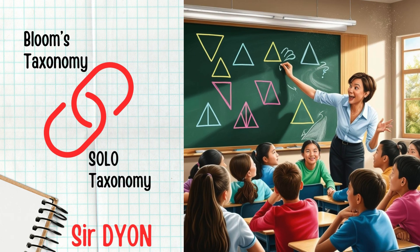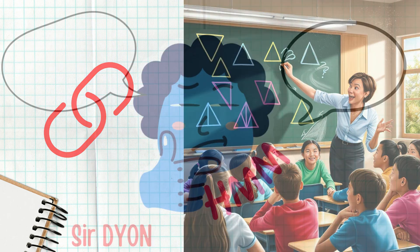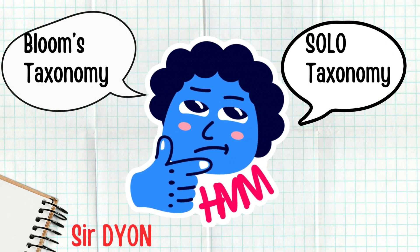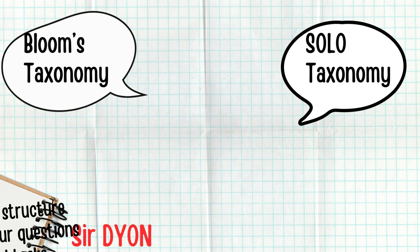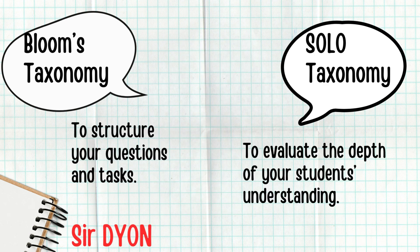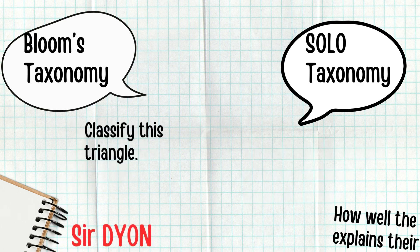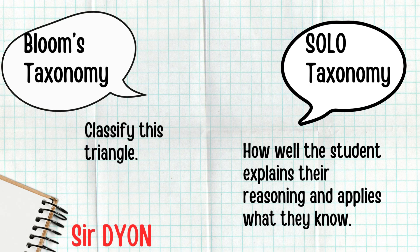By combining Bloom's and Solo, you see not just what a student knows, but how deeply they understand and can apply their learning. You don't have to choose between Bloom's and Solo — they work best together. Use Bloom's Taxonomy to structure your questions and tasks, and use Solo Taxonomy to evaluate the depth of your students' understanding. For example, a Bloom's question might be: classify this triangle. A Solo evaluation would look at how well the student explains their reasoning and applies what they know.